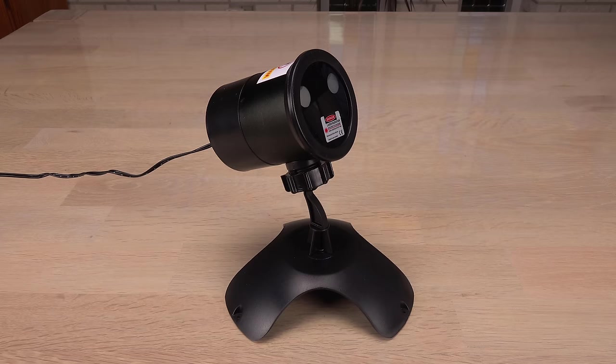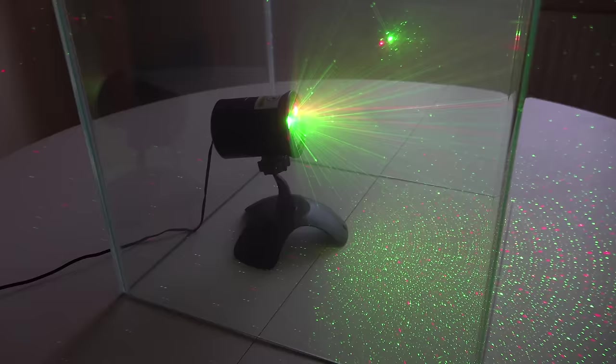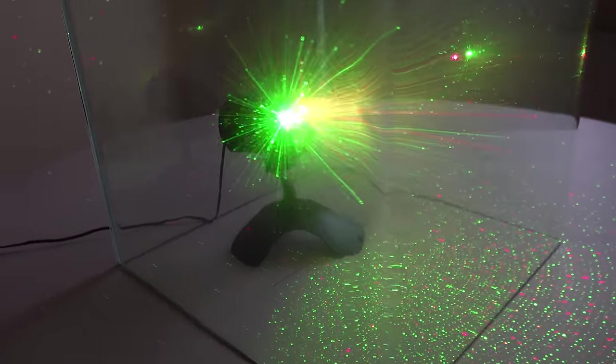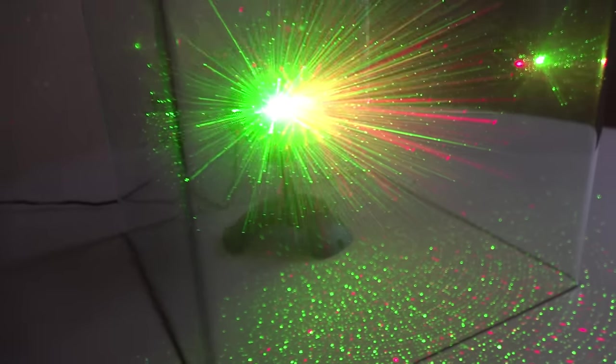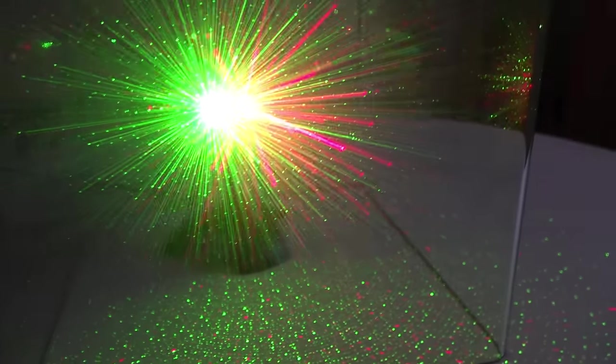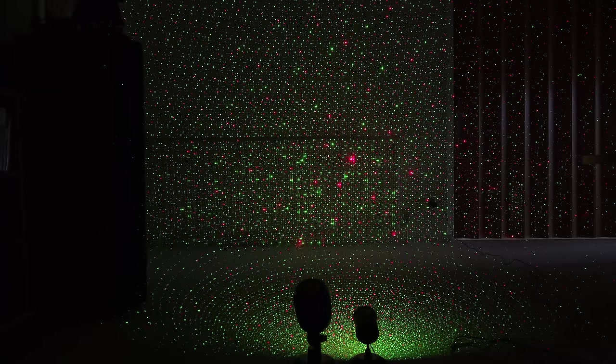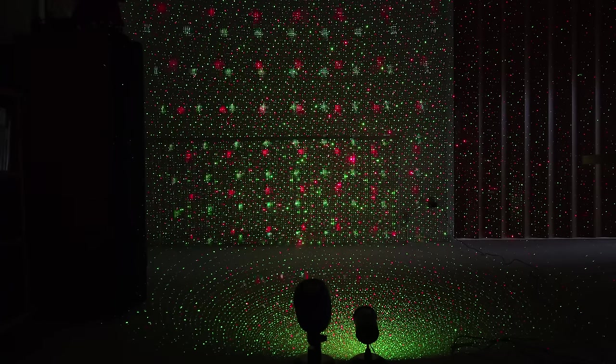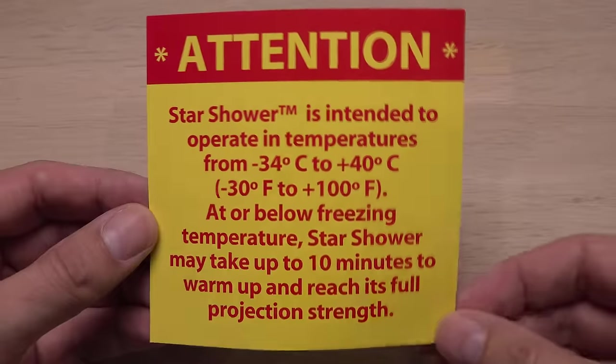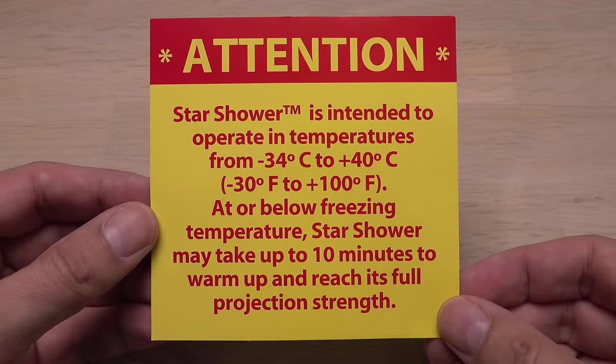This garden decoration laser also features a green DPSS laser. In Denmark these are typically used around Christmas to decorate houses on the outside with red and green laser dots. Meaning the laser could be standing outside on a freezing cold night. The manufacturers seem to be somewhat aware of the issue.